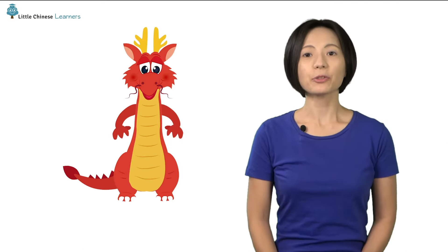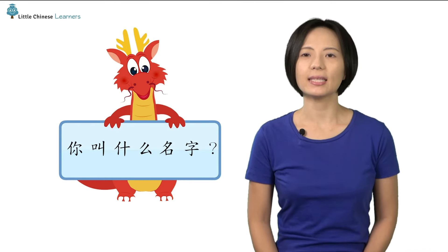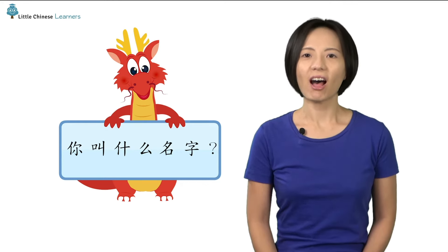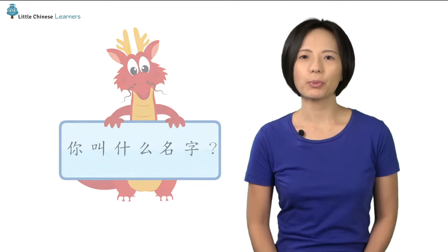To ask for people's names, we say 你叫什么名字? What is your name? 你叫什么名字? That's quite a long sentence, so let's break it down.